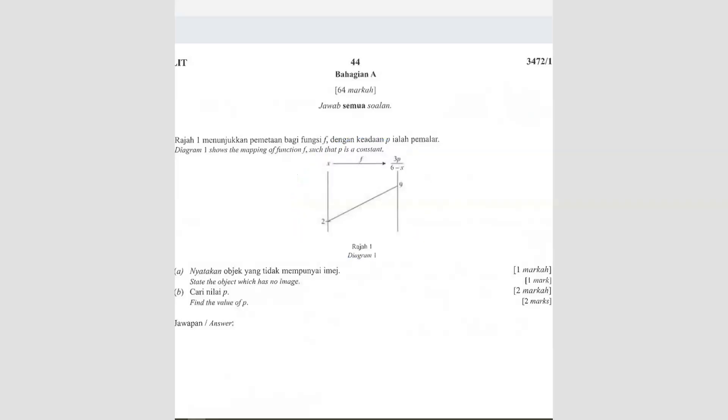The function here, the given function is f(x) equals 3p over 6 minus x. Okay, this is the function given.